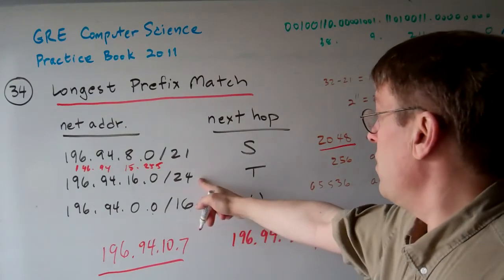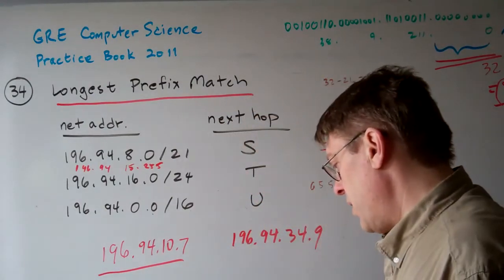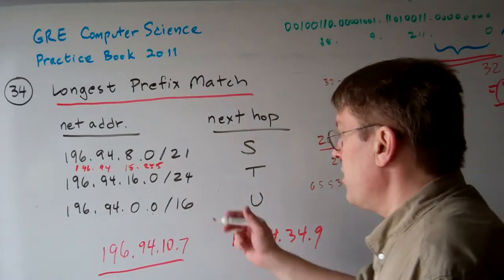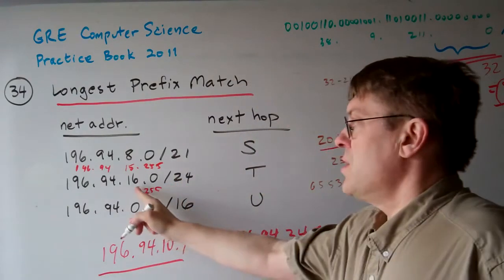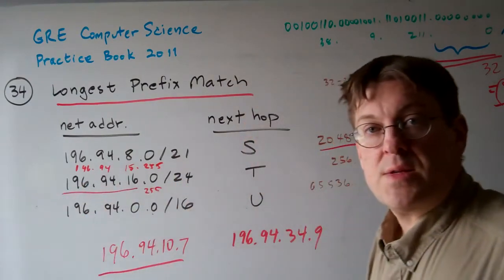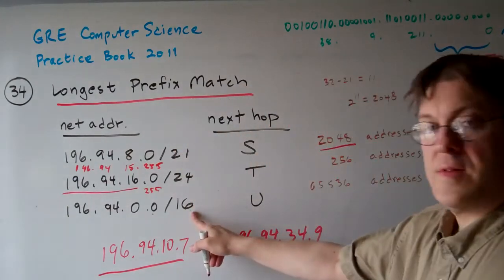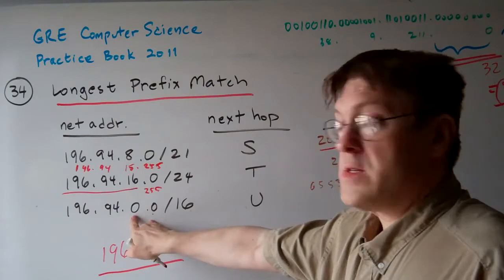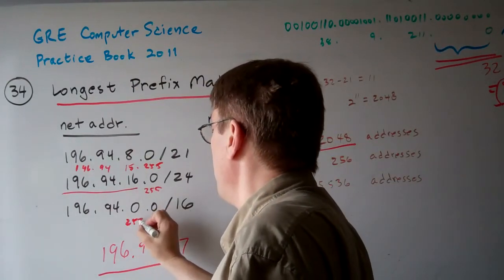For this one, it would be less. It would be, let's see, I wrote it down here. All the way, it would be, this is 24, so this would go to 255. So, this part of the prefix would remain the same. And then for this one, it's 16, which means that these last two would completely change. So, this would go all the way down to 255.255.